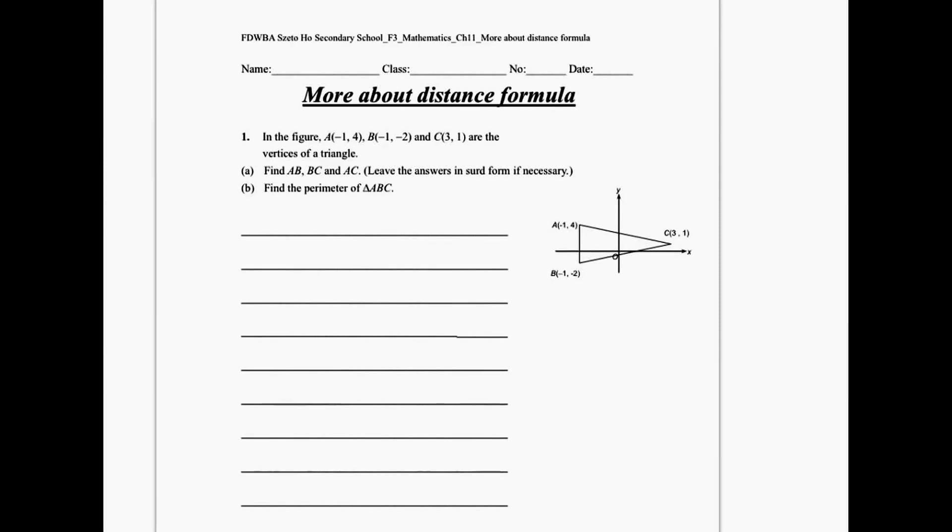Let's have a look at question number 1. In the figure, A, B and C are the vertices of a triangle. The meaning of vertices is the points of a triangle. We need to find AB, BC and AC. So first of all, we have to find the length of AB.